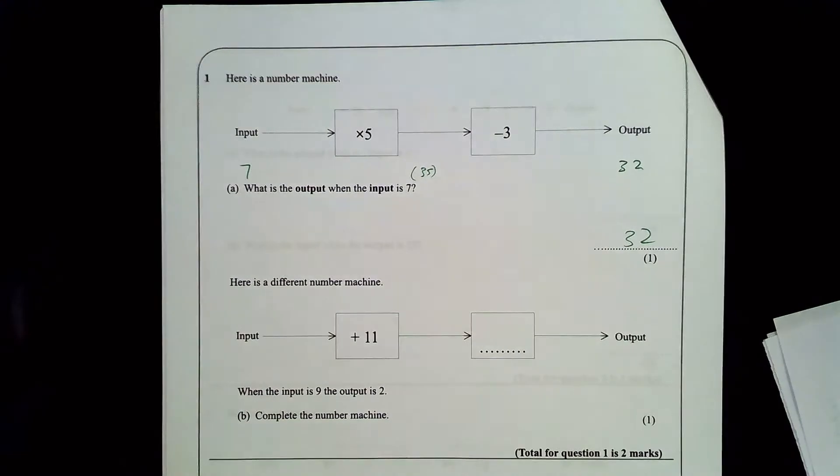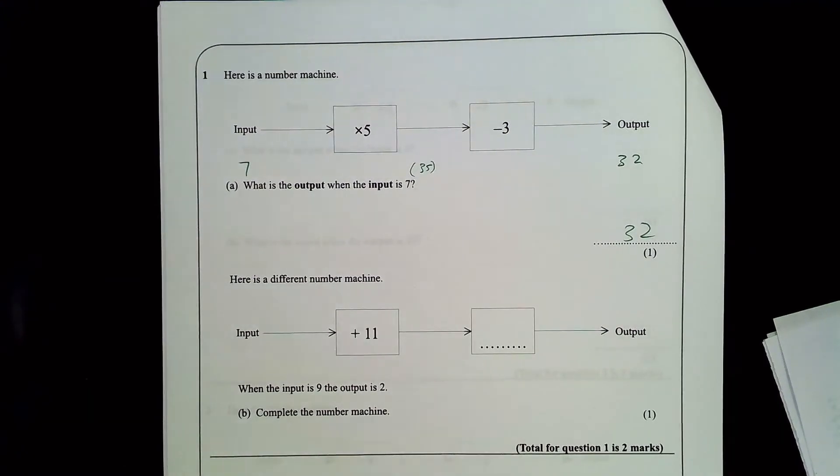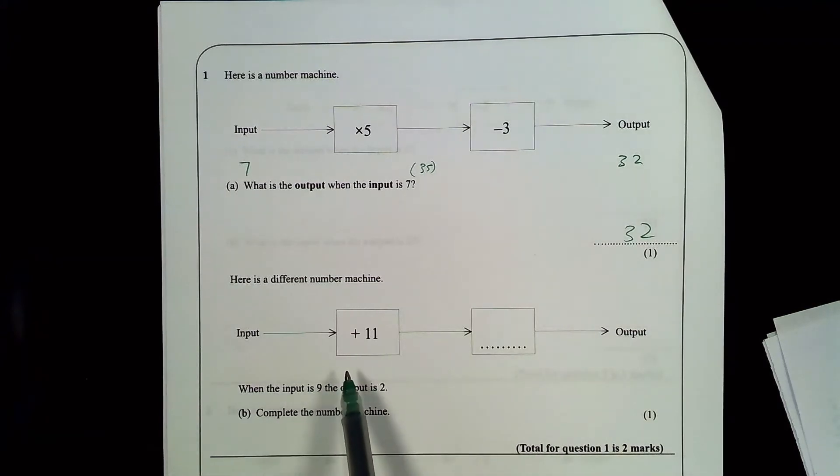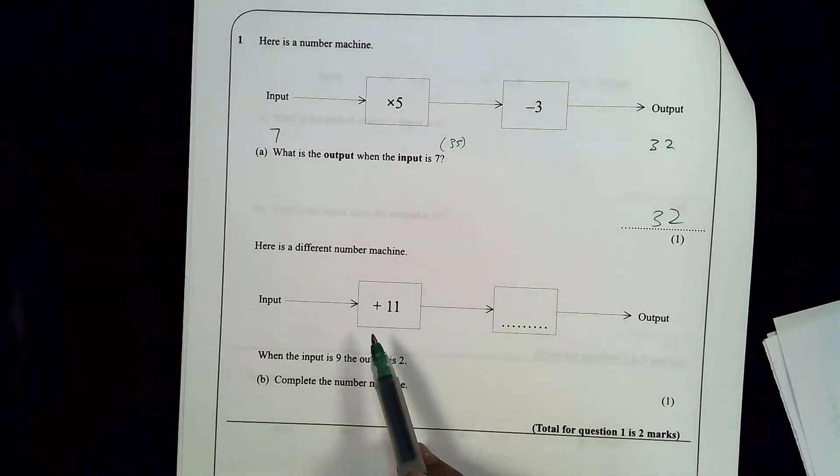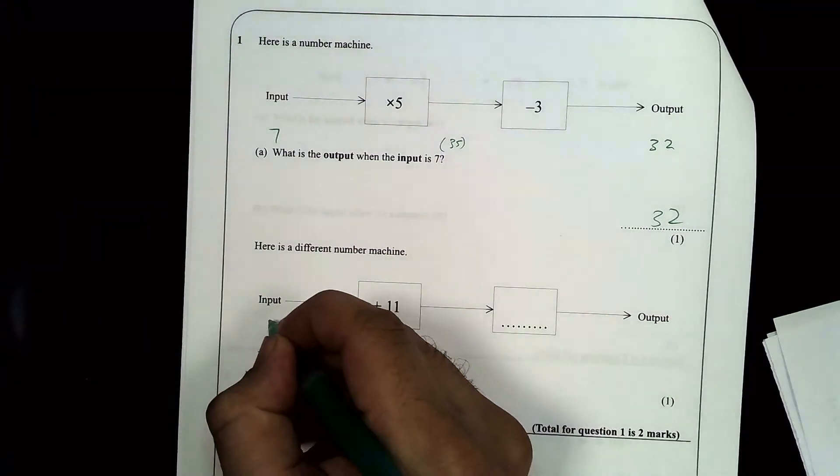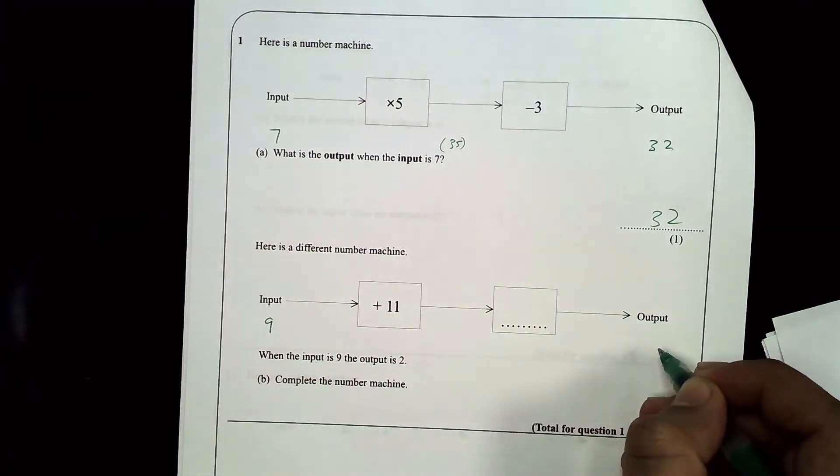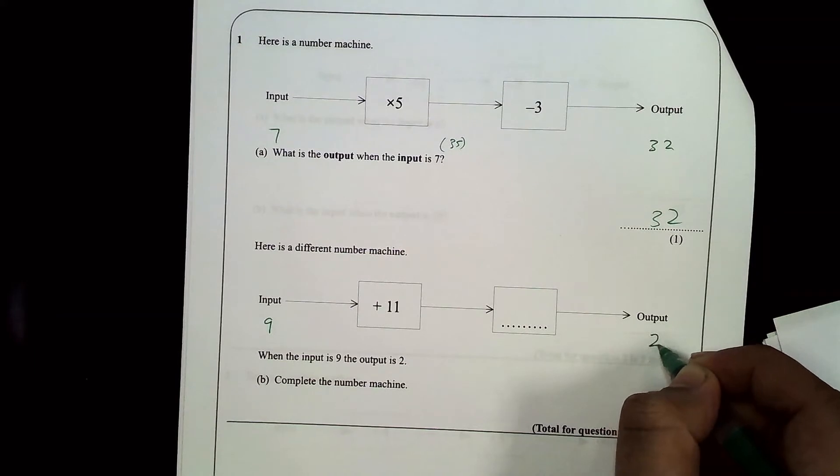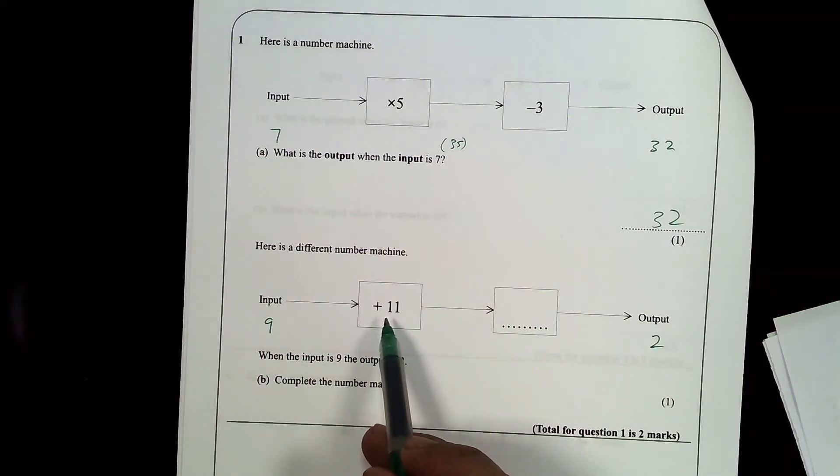So nice and simple, output's 32. Different number machine. So this is the other type of example. They've given you, when the input is 9, the output's 2. So when I put 9 in here, the output here is 2. So 9 plus 11 is 20.